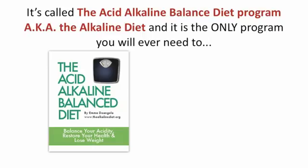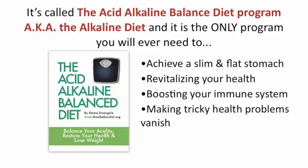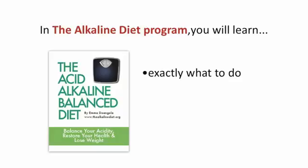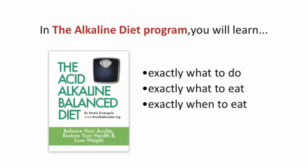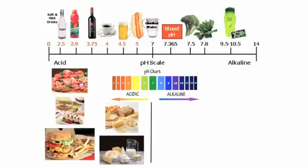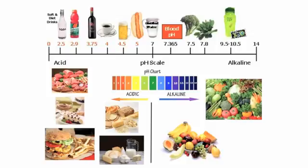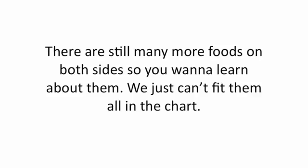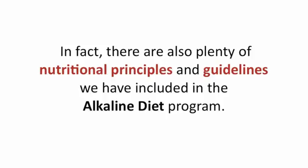It's called the Acid Alkaline Balance Diet Program, aka the Alkaline Diet, and it is literally the only program you will ever need to achieve a slim and flat stomach you long to see in the bathroom mirror every morning, and it's the secret to revitalizing your health, boosting your immune system, and even making tricky health problems vanish. In the Alkaline Diet Program you will learn exactly what to do, exactly what to eat, exactly when to eat, and exactly how to eat. Remember your body's ideal pH level of 7.35 to 7.45? The foods on the left are the acidic foods that you want to reduce and avoid. The foods on the right are a must to help you successfully lose weight and stay healthy. These are just a few of the examples to give you an idea of what eating alkaline is all about. There are still many more foods on both sides, so you want to learn about them. We can't just fit them all into the chart. In fact, there are also plenty of nutritional principles and guidelines we have included in the Alkaline Diet Program.